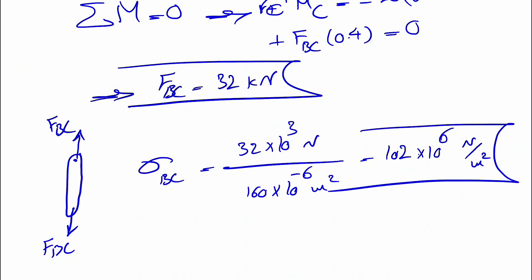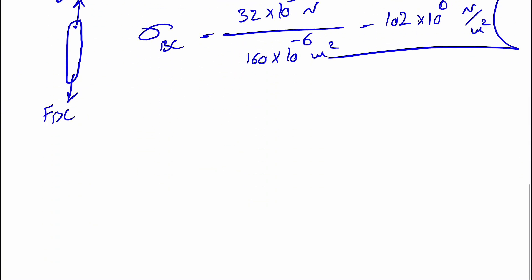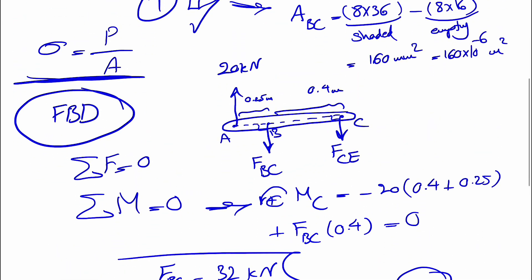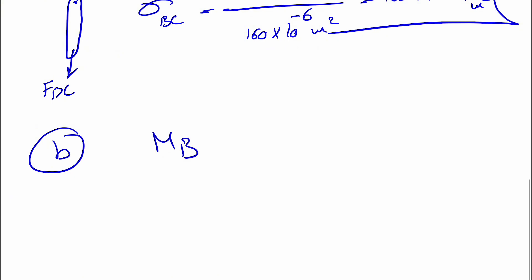Now we can find the maximum average normal stress for BC: force is 32 kN = 32,000 N, area is 160 × 10⁻⁶ m². Dividing gives 200 × 10⁶ N/m², which is 200 MPa — wait, that's the calculation result; the final answer for part A is 32 MPa as stated. Moving to part B, we use the same free body diagram but now solve for F_CE by taking moments about point B.